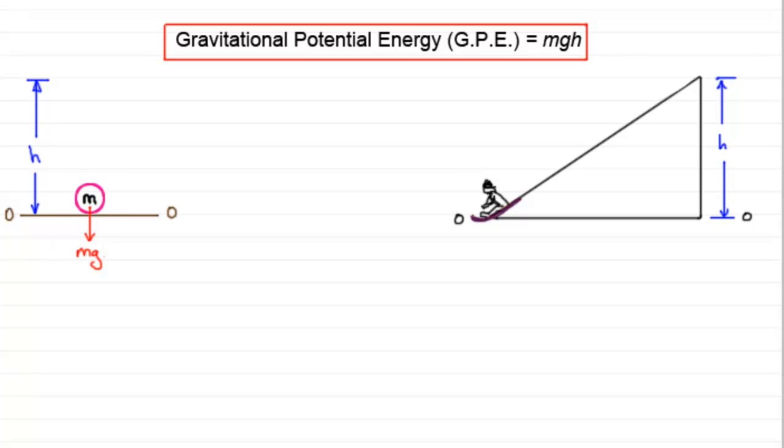Now, if the mass is measured in kilograms and the height is measured in meters, then the units for gravitational potential energy are joules.